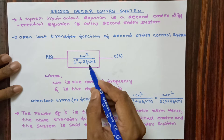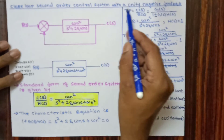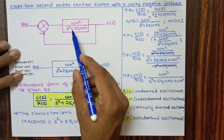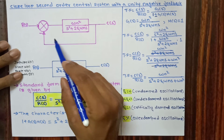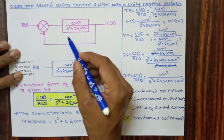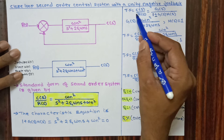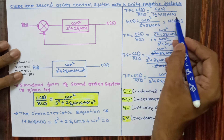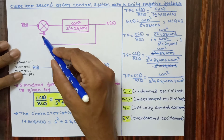By connecting the open loop transfer function with unity negative feedback, we get a closed loop control system. The closed loop second order control system with unity negative feedback is shown in this figure. To determine the transfer function of this closed loop system: C(s)/R(s) = G(s) / (1 ± G(s)*H(s)). The sign plus or minus depends upon the feedback.